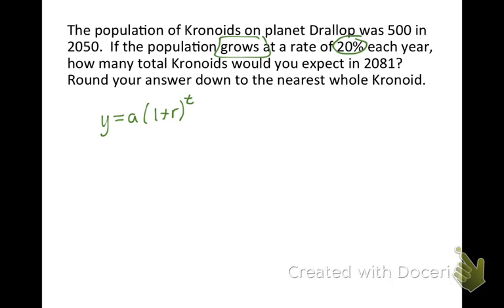Okay, so A needs to be our initial population. Well, the initial amount was 500. That 1 just stays in there. Our rate is 20%, but we need to make sure to change that to a decimal. So move our decimal to the left 2, and we get .2. And then it's all to the T. Okay, so there's our equation.